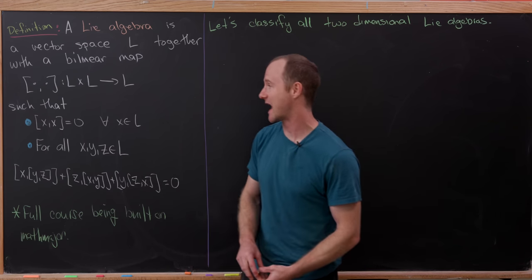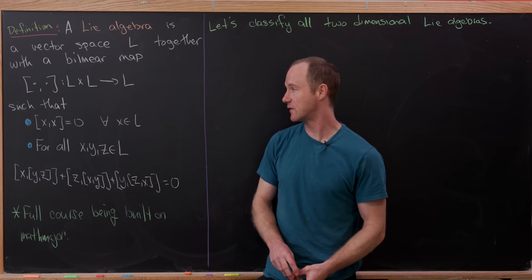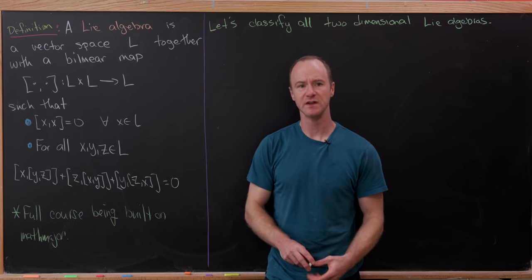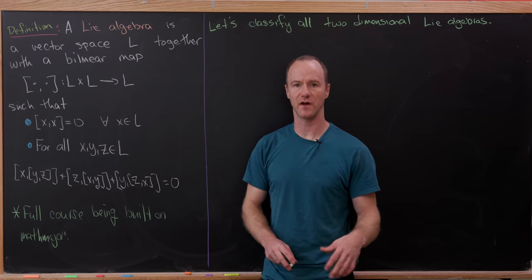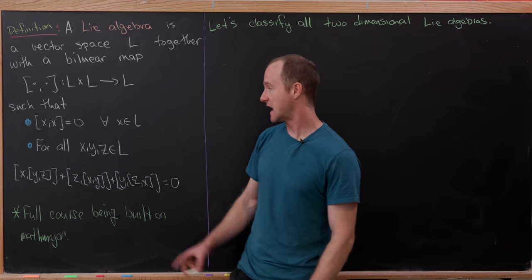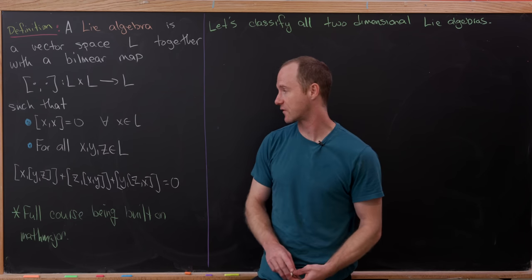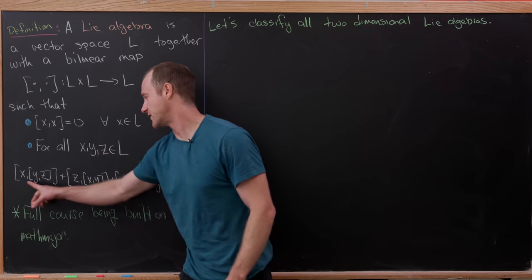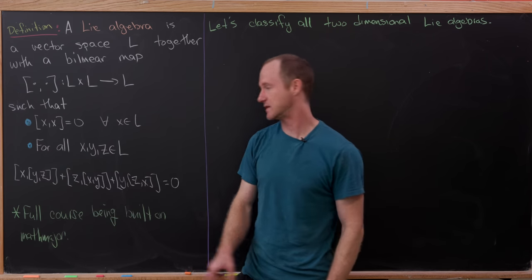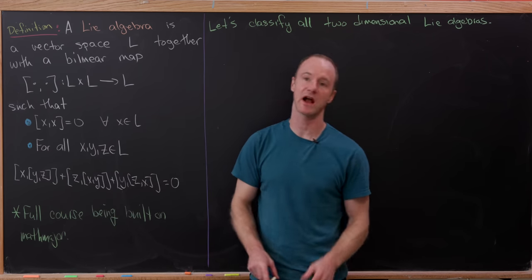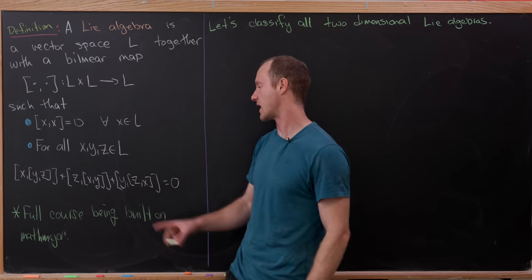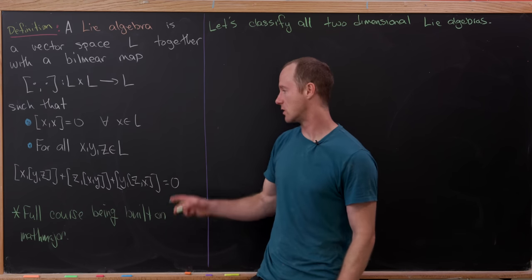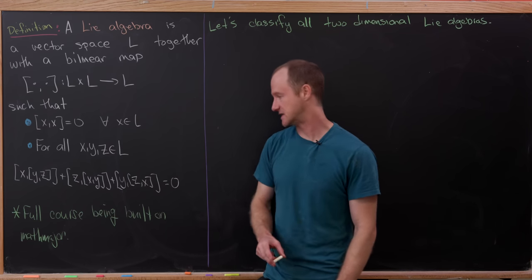The first condition is that the bracket of x with itself is equal to zero for all x inside L. This is called the alternating condition. The second is that for all x, y, z inside L, the bracket of x with the bracket of y,z, plus the bracket of z with the bracket of x,y, plus the bracket of y with the bracket of z,x is equal to zero. This is known as the Jacobi identity.